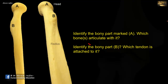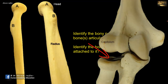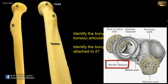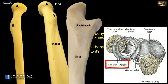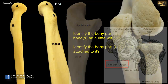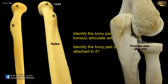Its proximal end is cup-shaped and articulates with the capitulum of the humerus as part of the elbow joint. The circumference of the head is related to the annular ligament, which binds the head to the radial notch of the ulna, where the head of the radius articulates with the radial notch of the ulna at the proximal or superior radio-ulnar joint.